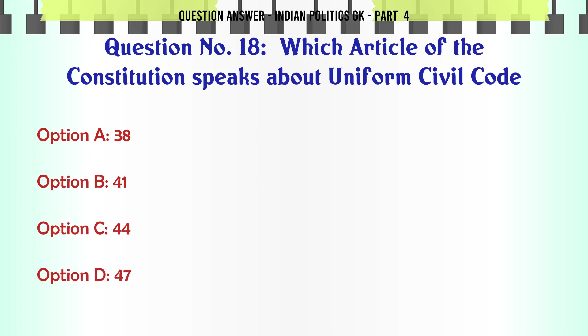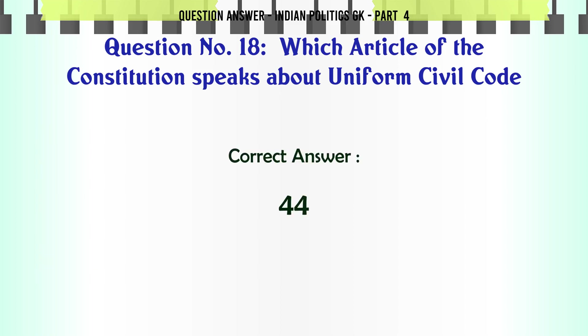Which article of the Constitution speaks about the Uniform Civil Code? A. 38. B. 41. C. 44. D. 47. The correct answer is 44.